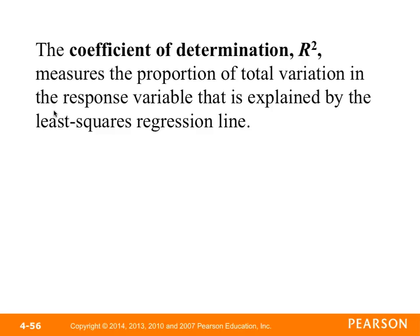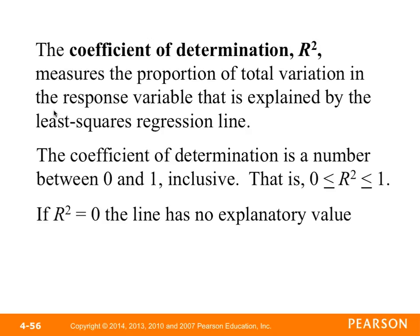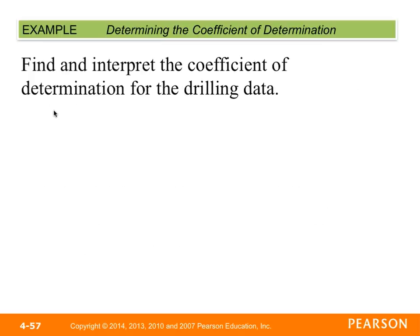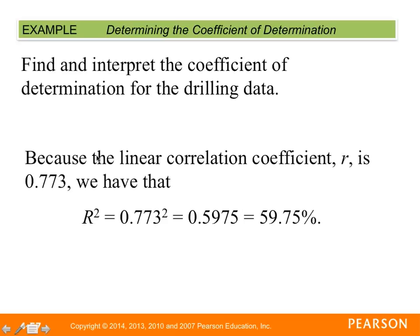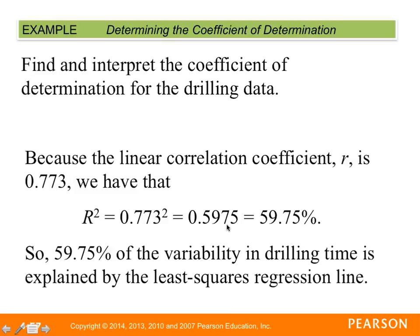The coefficient of determination, r-squared, measures the proportion of total variation in the response variable explained by the least squares regression line. It's always between 0 and 1 — 0 means the line has no explanatory value, 1 means it's perfect. In our case, the linear correlation coefficient r is 0.773. We square it to find r-squared, which is 0.5975. This means that 59.75% of the variability in drilling time is explained by the least squares regression line.